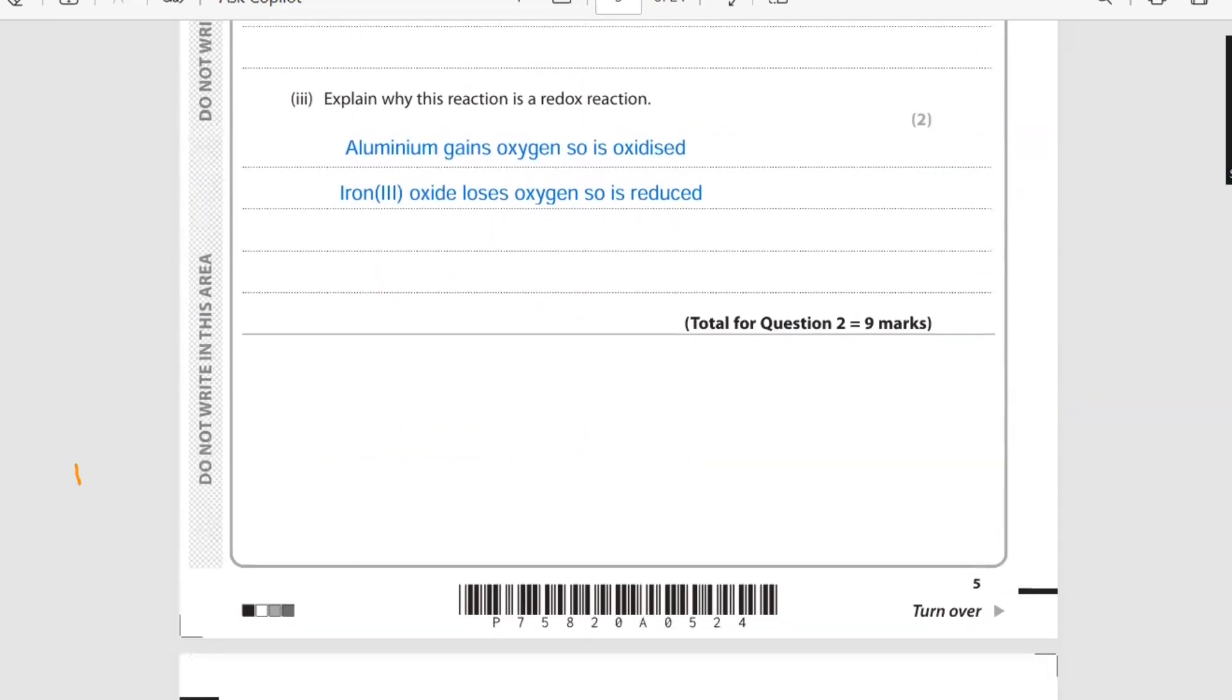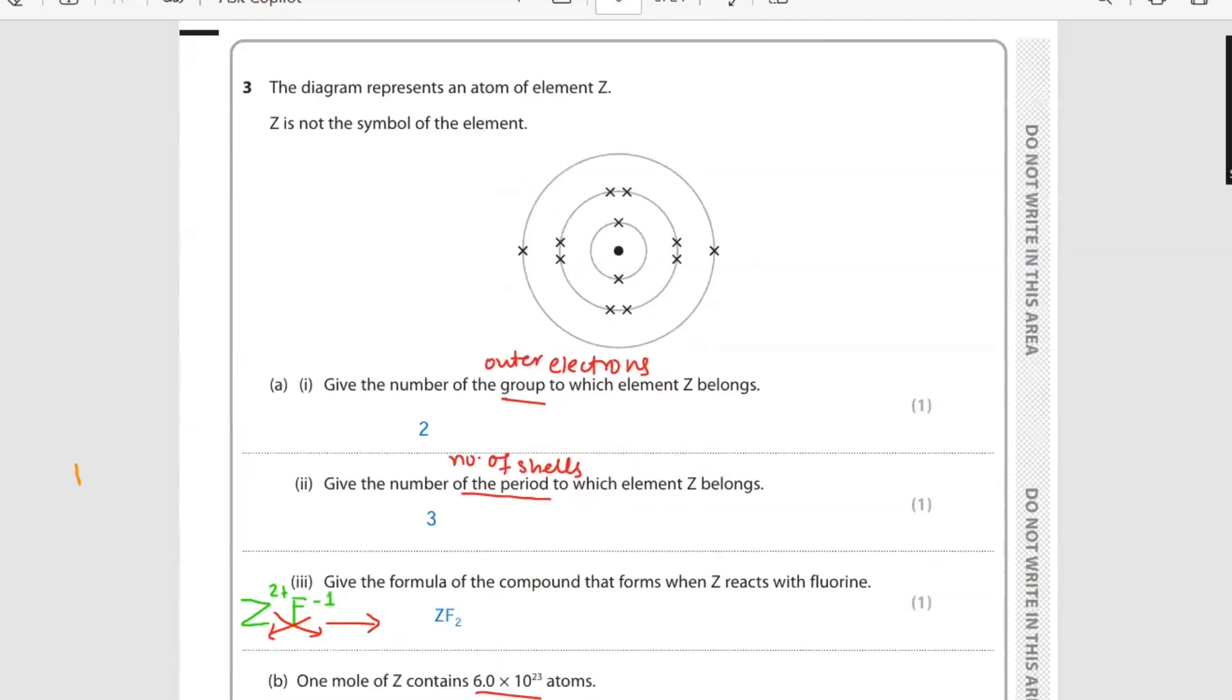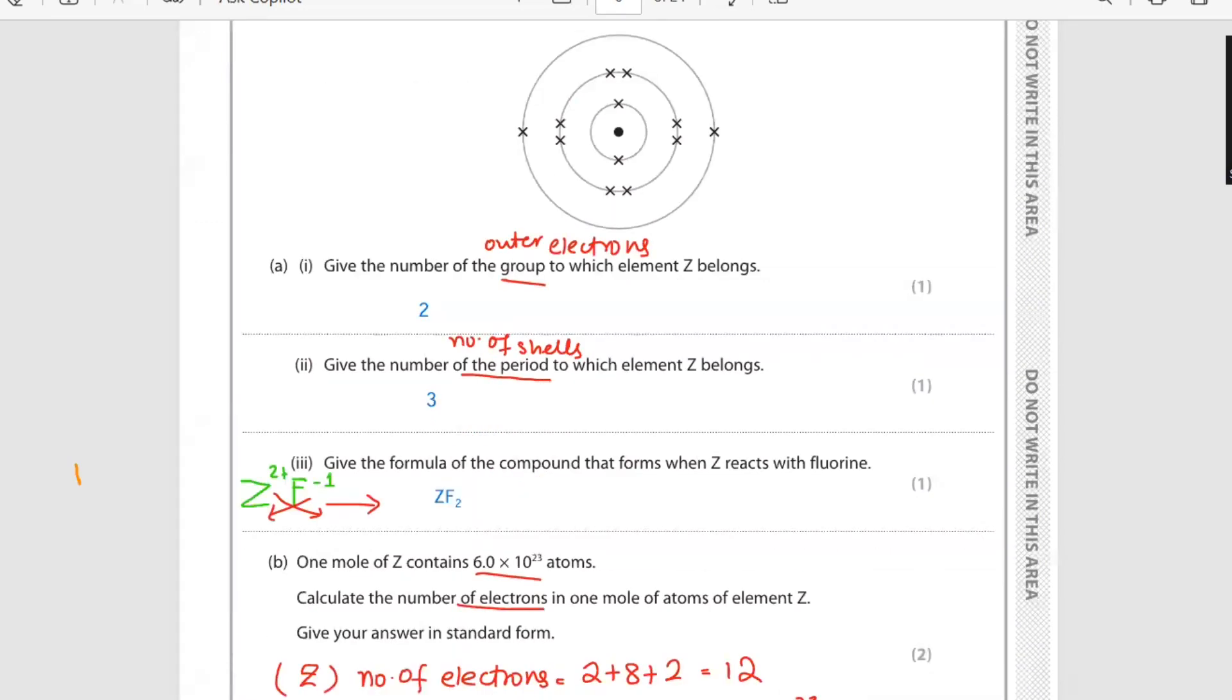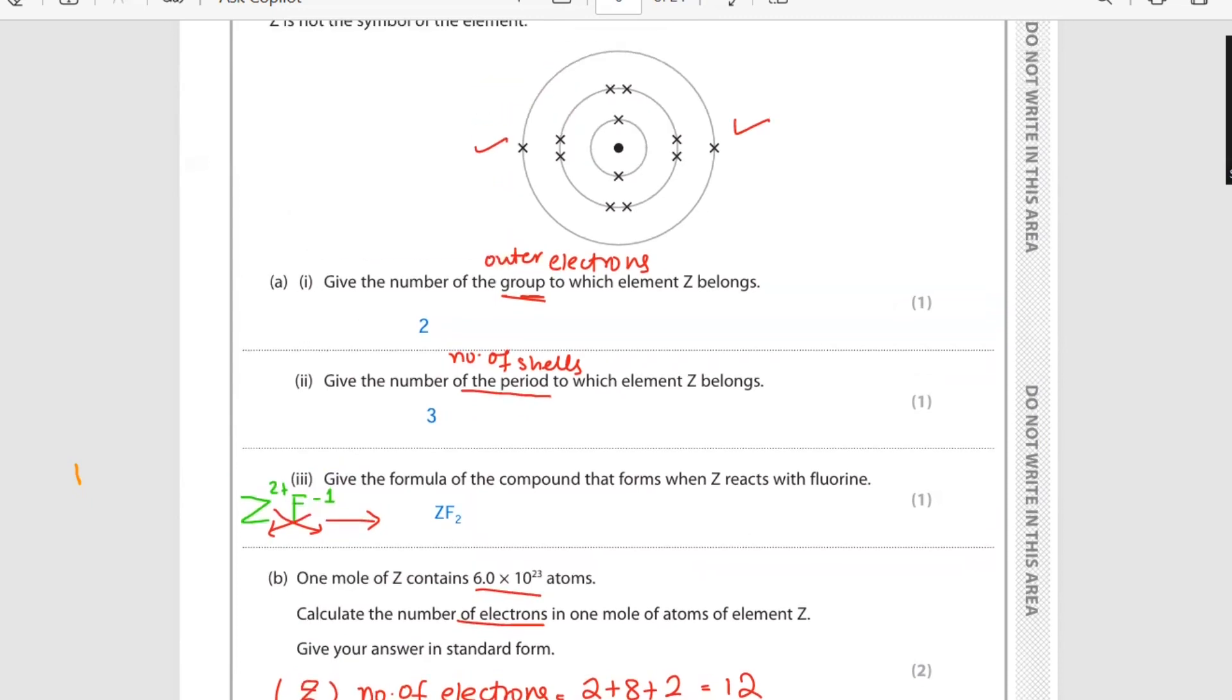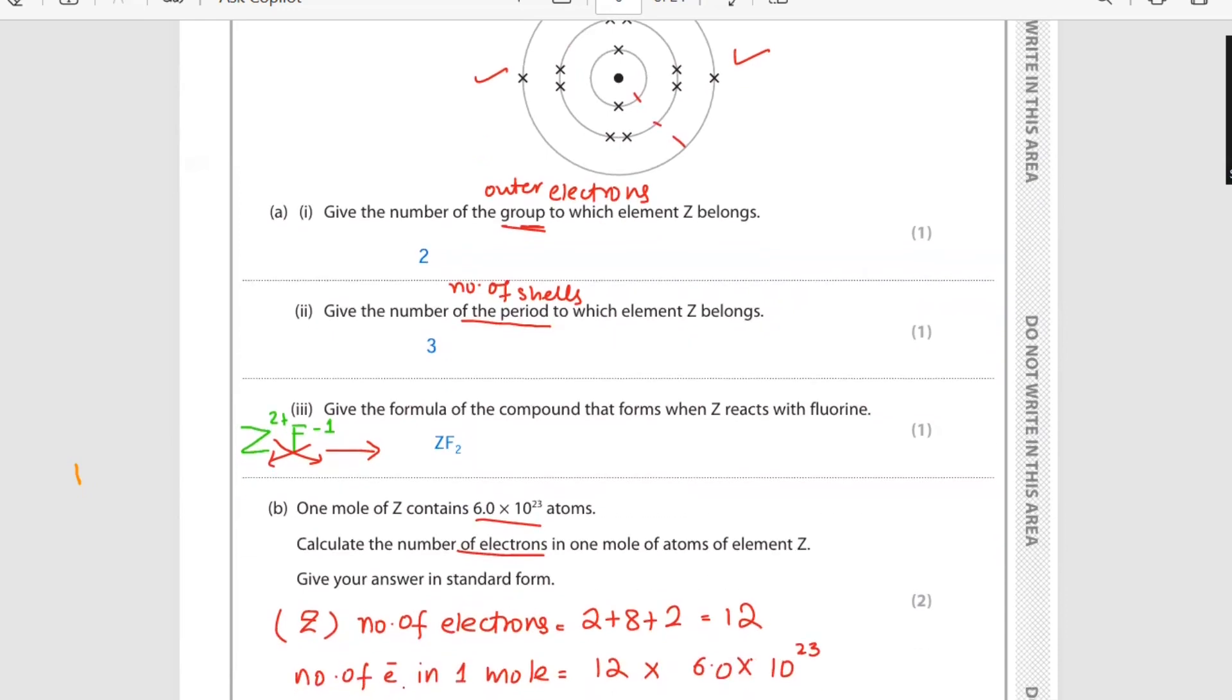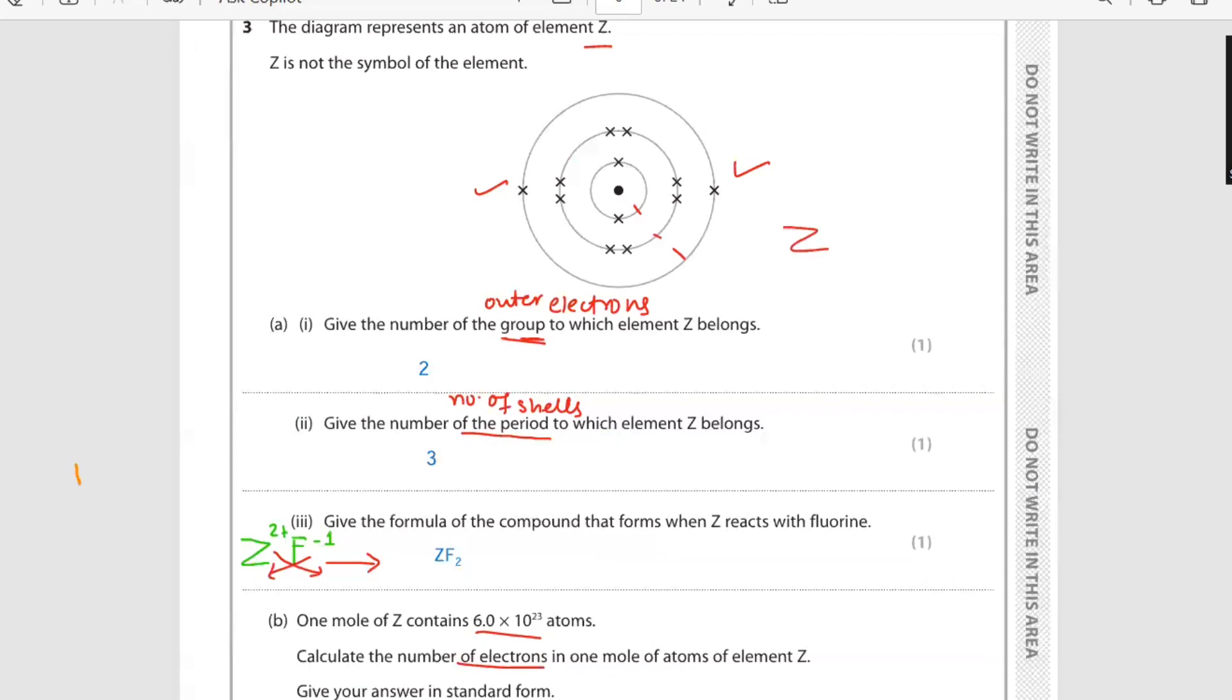The diagram represents an atom of element Z - Z is not the symbol of the element. Give the number of the group to which element Z belongs. Number of group you can identify by number of outer electrons - it has two electrons, so it's from group 2. Give the number of period to which element Z belongs. Number of period you can determine by number of shells - it has three shells: one, two, three, so of course it's period 3. Give the formula of the compound that forms when Z reacts with fluorine. You can see here Z has two electrons in the outer shell, it means it is coming from group 2 and it will make positive two valency. Fluorine is having negative one valency, and when we do the crossover it will give you ZF2.